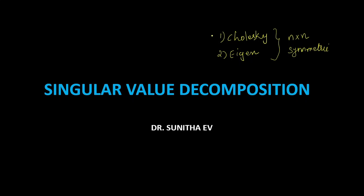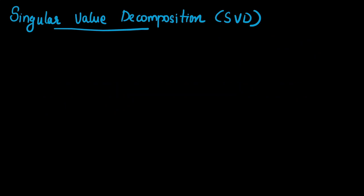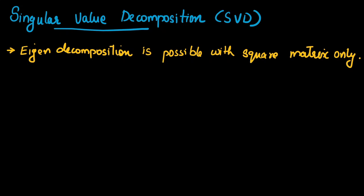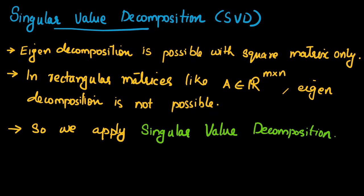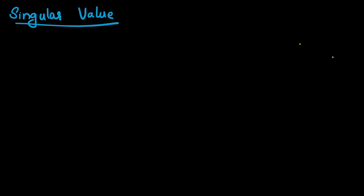Only square matrices can be decomposed using Cholesky or eigen decomposition methods. If we have a rectangular matrix — an m by n matrix — then we have to go for Singular Value Decomposition. SVD supports the decomposition of rectangular matrices, and that is the major difference that makes SVD important. Eigen decomposition is only possible with square matrices; for a rectangular matrix A belonging to R m by n, eigen decomposition is not possible, so we apply SVD.